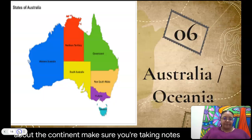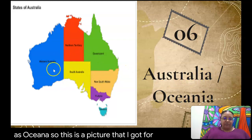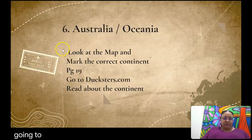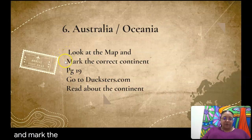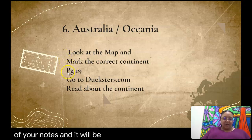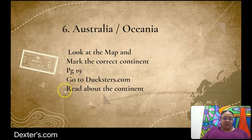Make sure you are taking notes. Australia — you will notice it also says Oceania, because Australia is also referred to as Oceania. This is a picture of the area with some regions shown. Go to your textbook page 19, look at the map and mark the correct continent. You have a picture on the right side of your notes. Once you have marked Australia, also known as Oceania, go to Dexters.com and read about the continent.